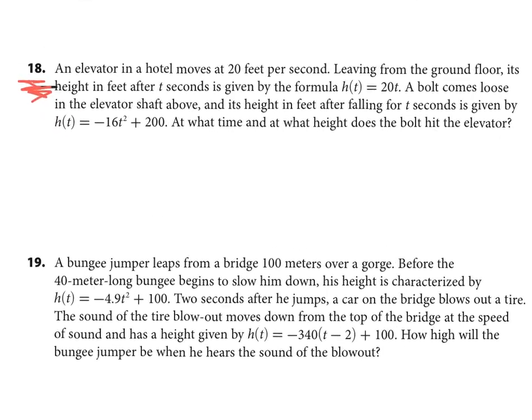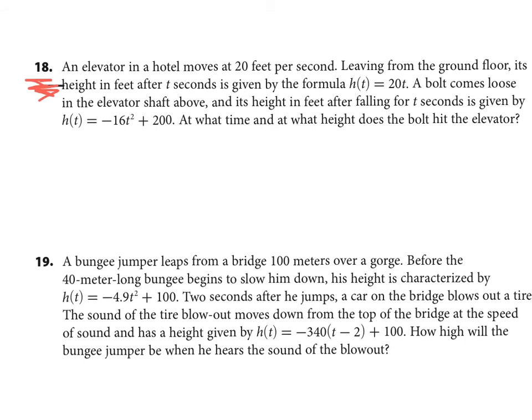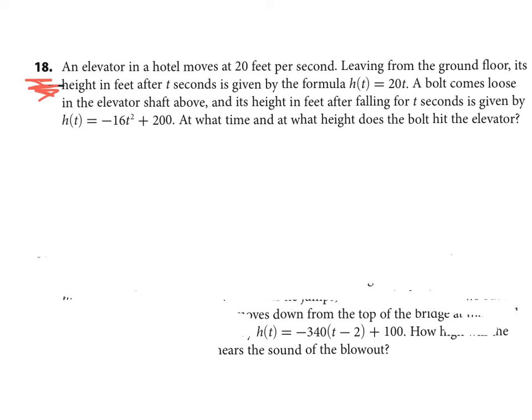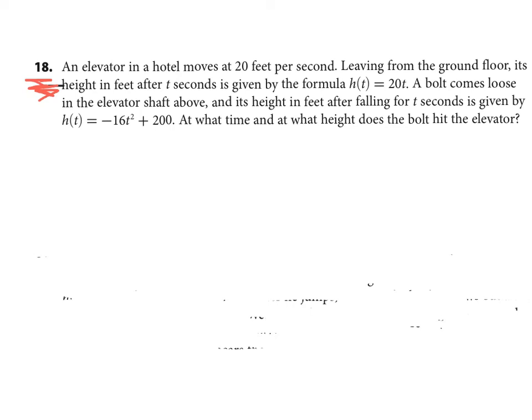All right, word problem. An elevator in a hotel moves at 20 feet per second. Leaving from the ground floor, its height in feet after t seconds is given by the formula. A bolt comes loose in the elevator shaft above, and its height in feet after falling for t seconds is given by another formula. At what time and at what height does the bolt hit the elevator? So you have one that's for the bolt, one that's for the elevator. Basically, all you're asking is when does this equal this. So again, you're just setting up an equation.